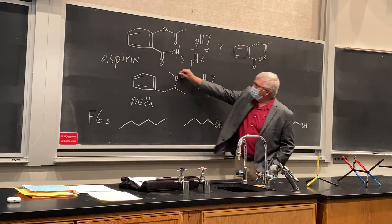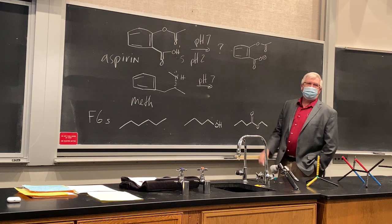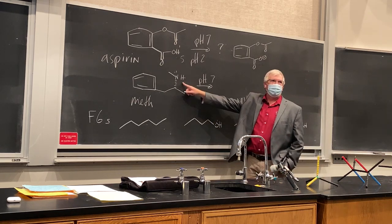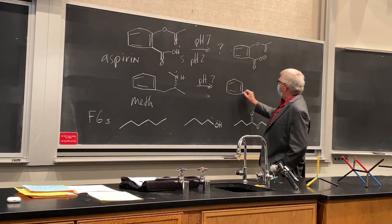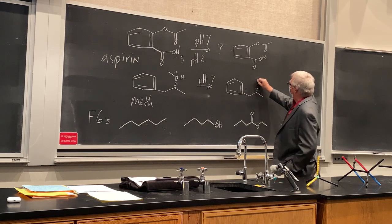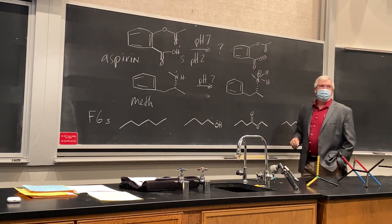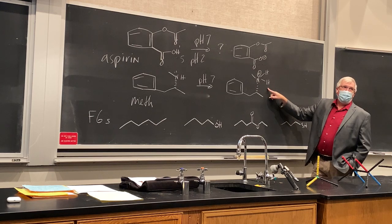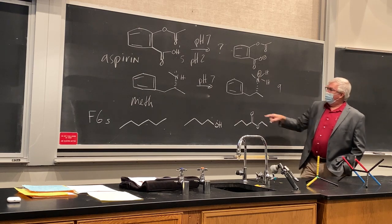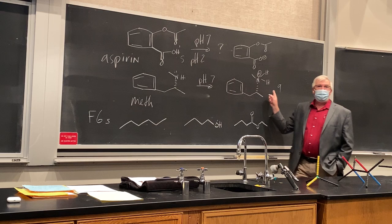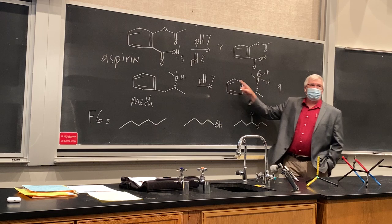How about meth? Here we have an amine with a lone pair. If we put that in pH 7, will it stay neutral? The pKa of its conjugate acid — the ammonium group — is 9. So if we're at pH 7, are we on the acidic or the basic side of that 9? We're on the acidic side, so it's going to stay protonated.